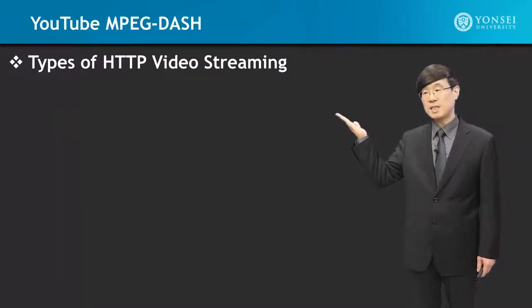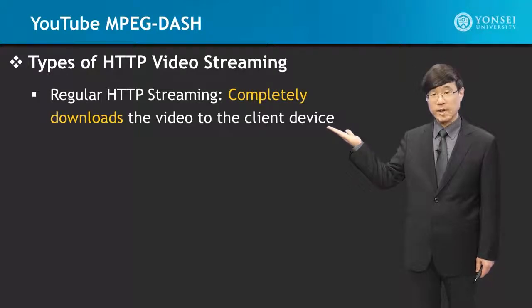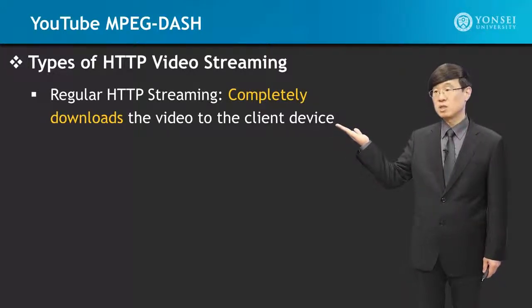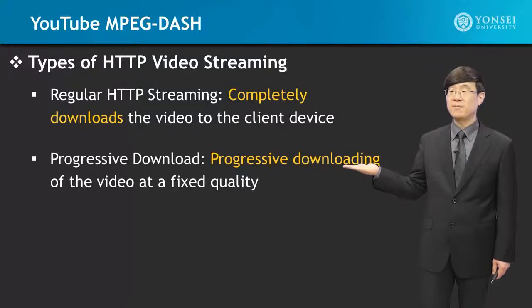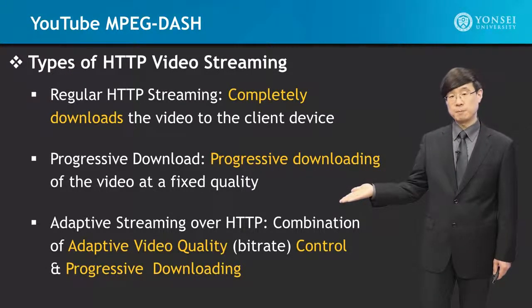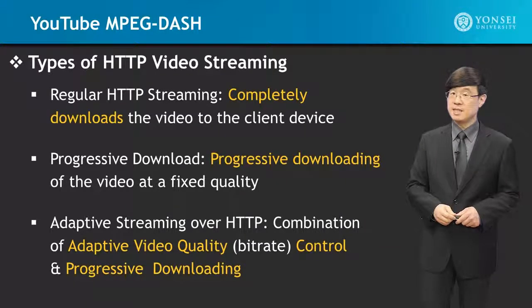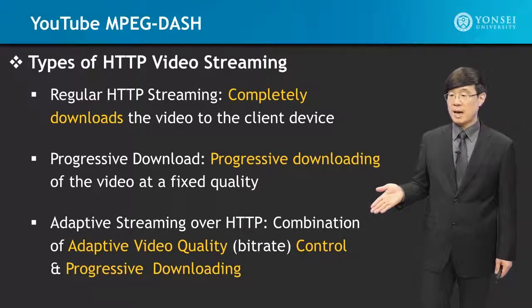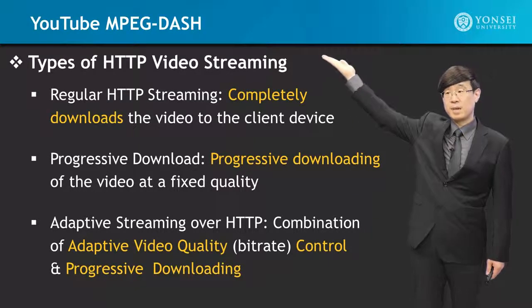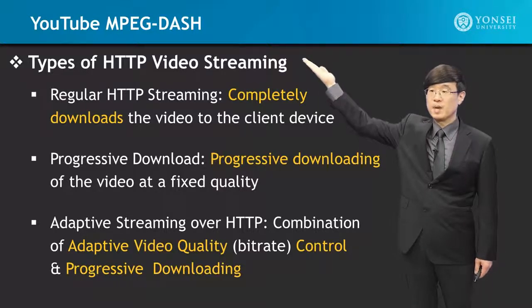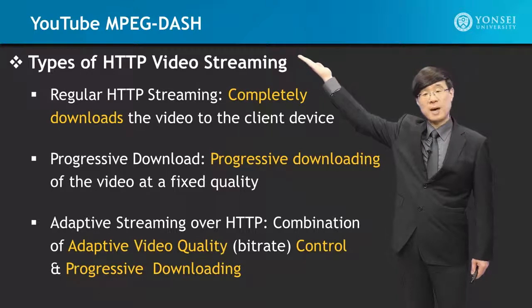There are types of HTTP video streaming. There is regular HTTP streaming, which completely downloads the video to the client device. Then there is progressive, which progressively downloads the video at a fixed quality. Then there is adaptive streaming over HTTP, which is a combination of adaptive video quality, adaptive video rates, control, and progressive downloading techniques all used together. Typical techniques that support this include MPEG-DASH, which YouTube is using.